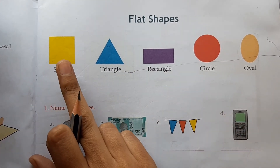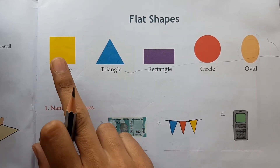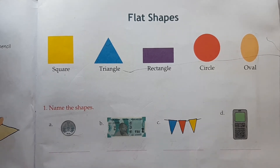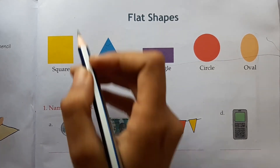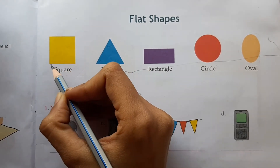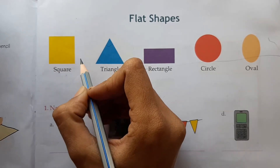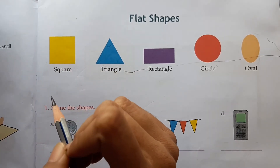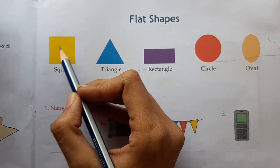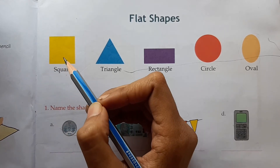Look, the first shape is this one. This is the shape of a square. A square has four sides — one, two, three and four. This is the shape of a square having four sides and also having four corners — one, two, three and four.